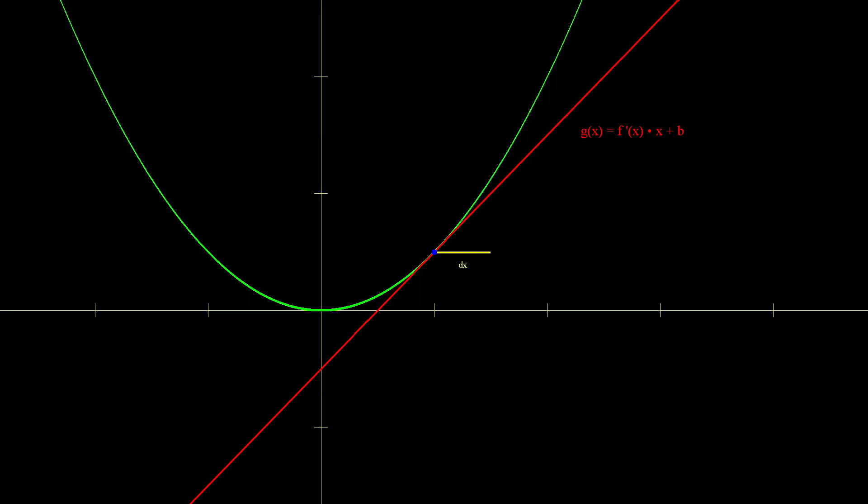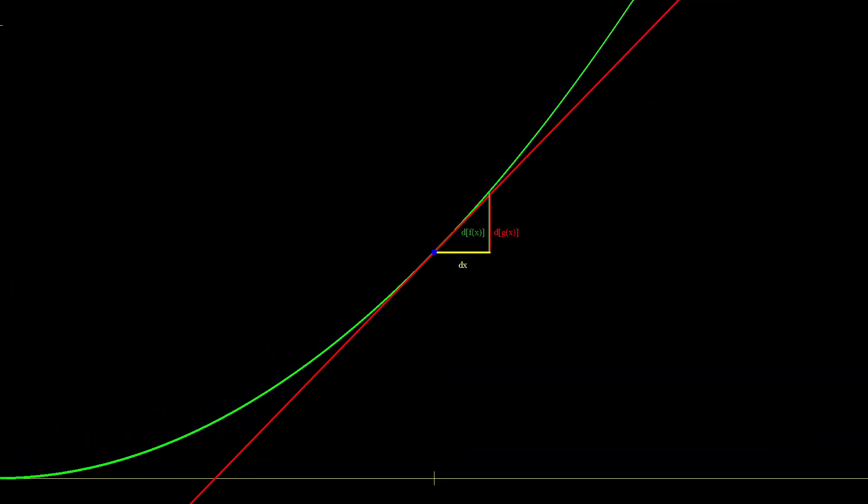Now what happens if we take a tiny step dx from the tangent point? By how much does f and g change? Let's call the change df of x and dg of x. Currently, you can see that df of x is greater than dg of x. But remember, dx is something infinitely small. Therefore, as dx here approaches 0,